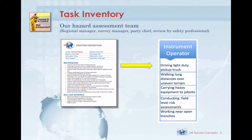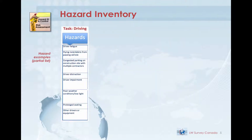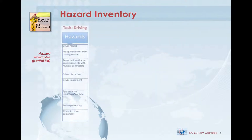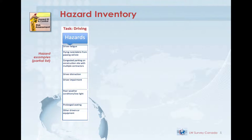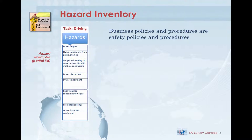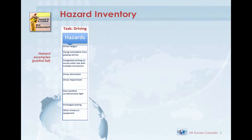We've listed just a few of the instrument operator tasks here as an example. Each one of these tasks will be assessed to look at the associated hazards. We're going to pick the task of driving a light-duty pickup truck for this tutorial. The team lists the hazards associated with driving. Solutions to the driving hazards listed here will be an excellent example that business policies and procedures are safety policies and procedures, and many of the controls we'll identify are either required by Canadian legislation or by our contractual agreement with our customers.